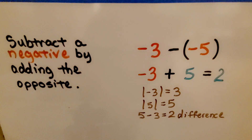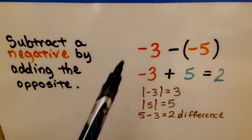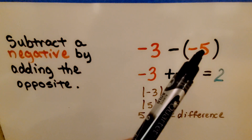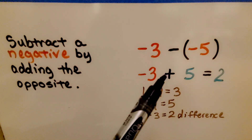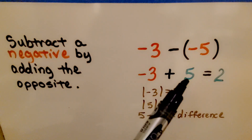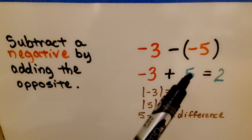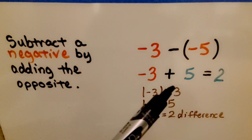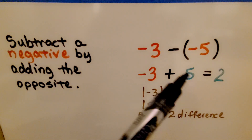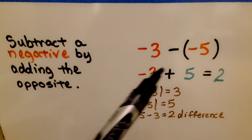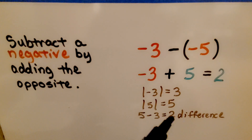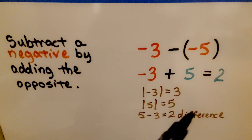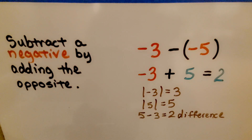When we subtract a negative, we do it by adding a positive. We have negative 3 minus negative 5. This minus sign becomes a plus sign, and this negative 5 becomes a positive 5. We find the difference of their absolute values because we're adding two different signs. The difference is 2, and the sum takes the sign of the add-in with the greater absolute value — the positive 5. We have positive 2.